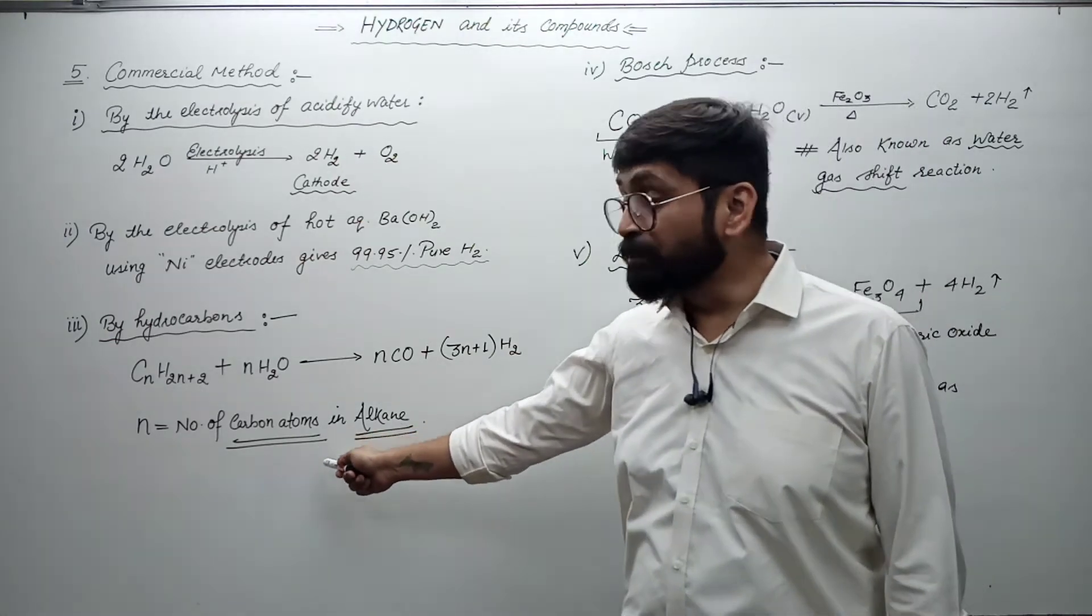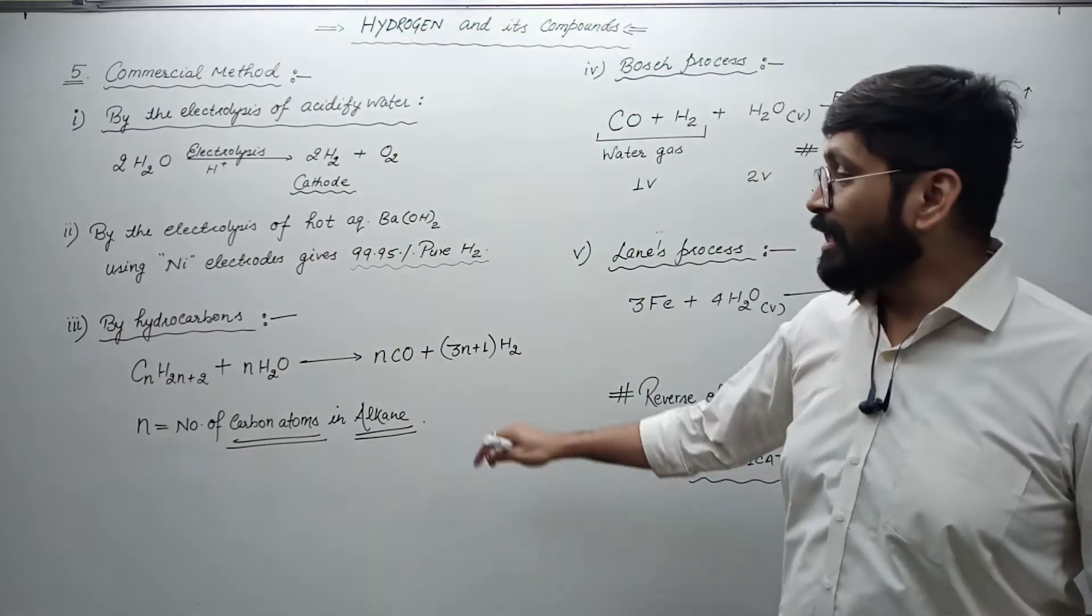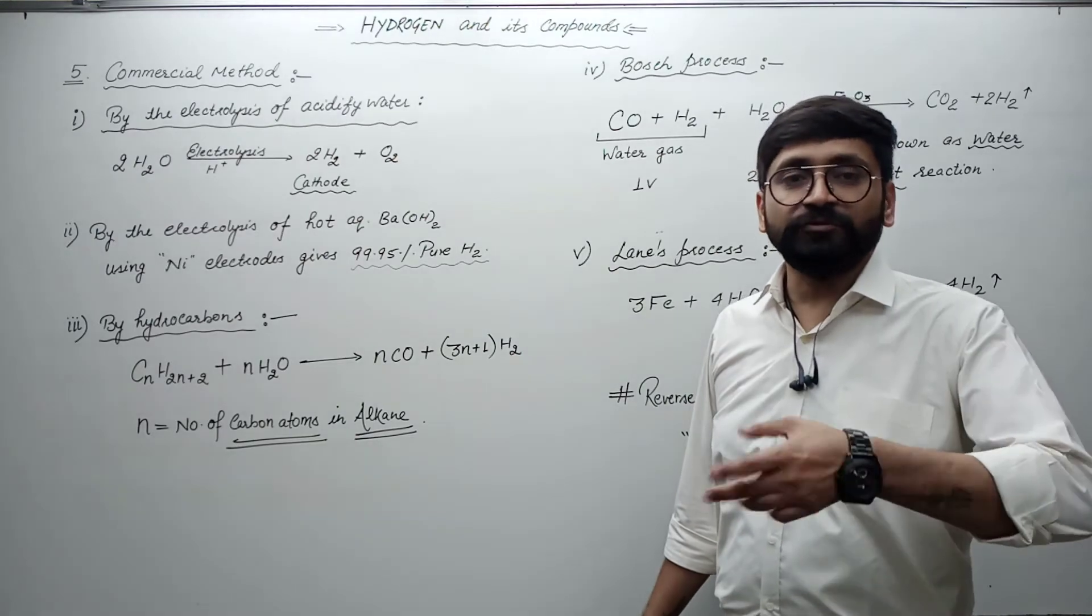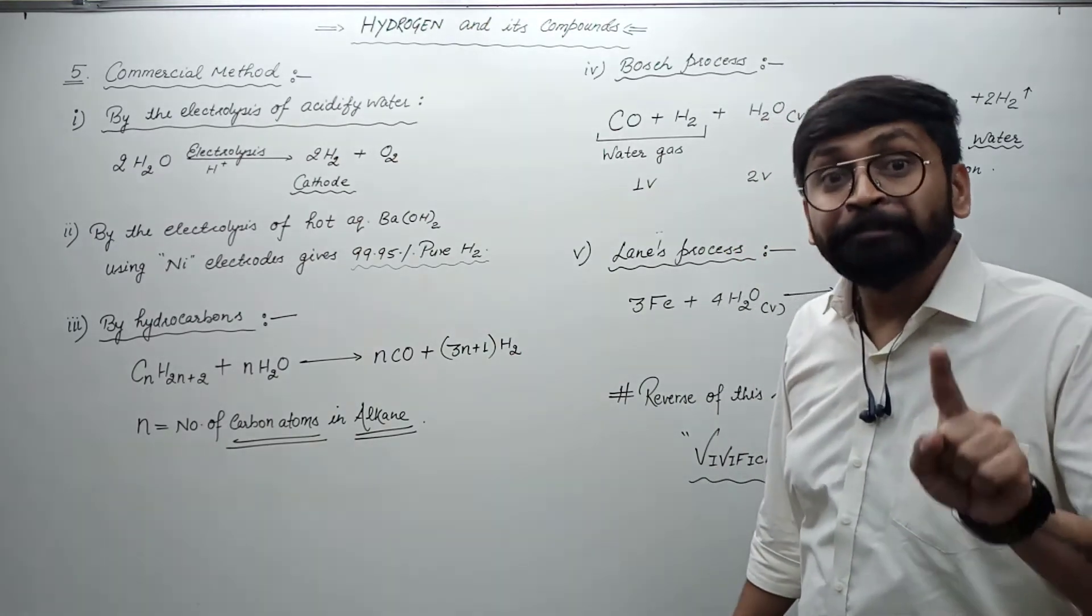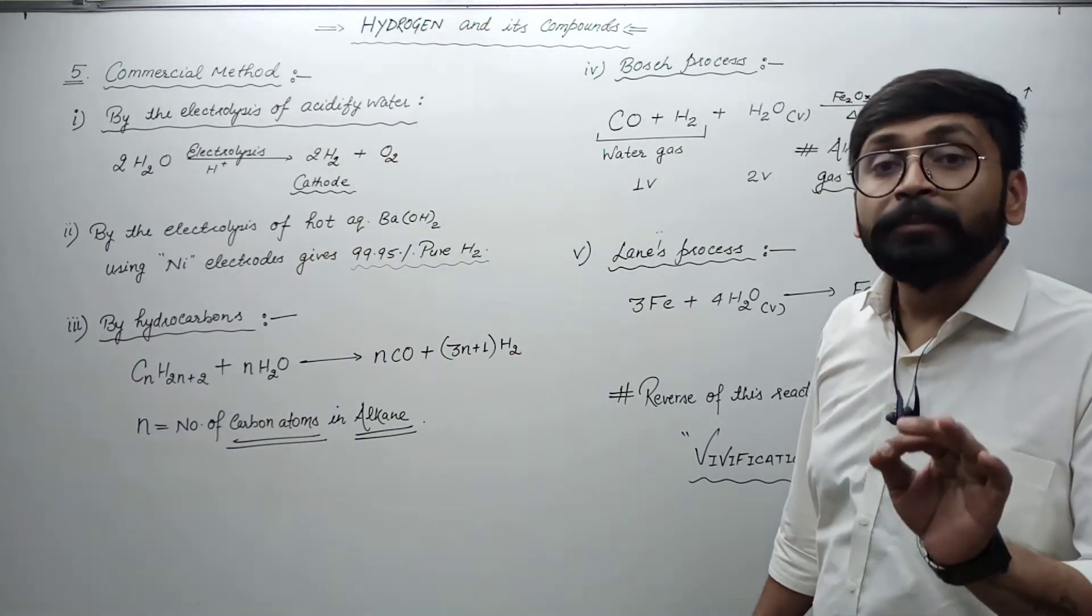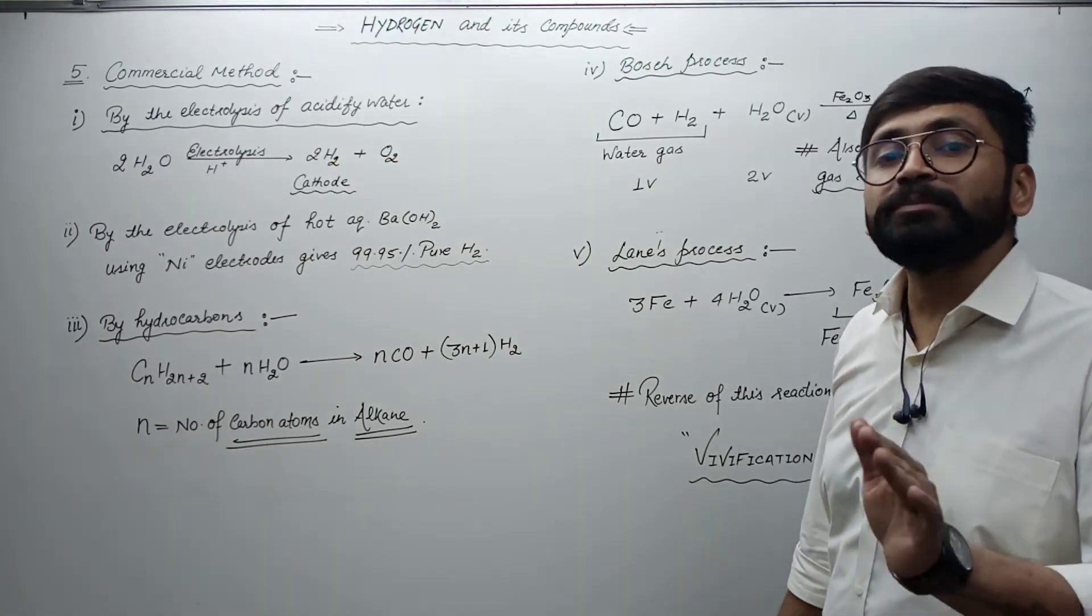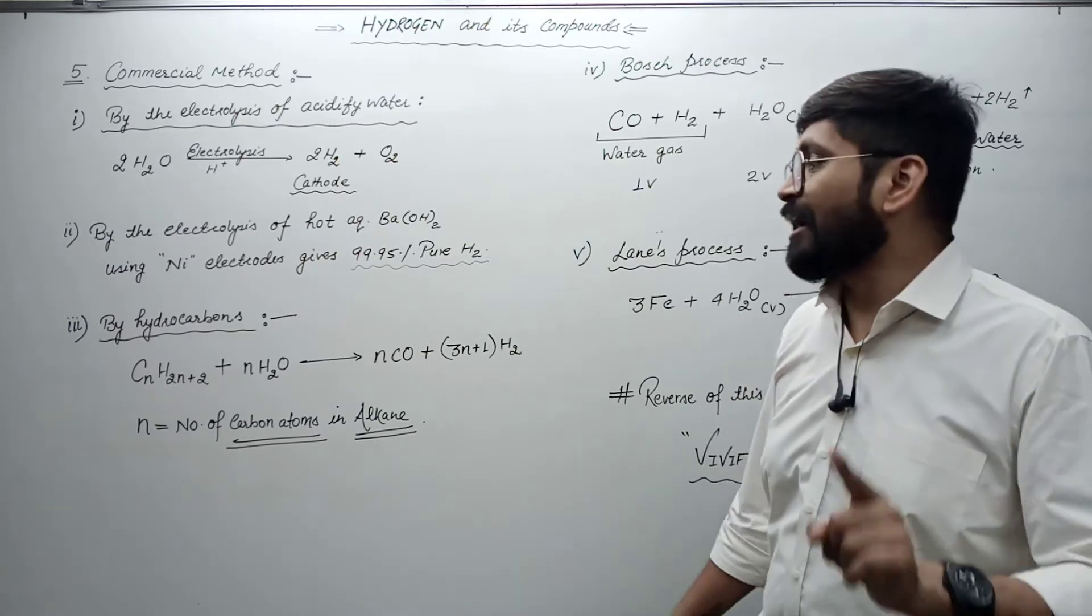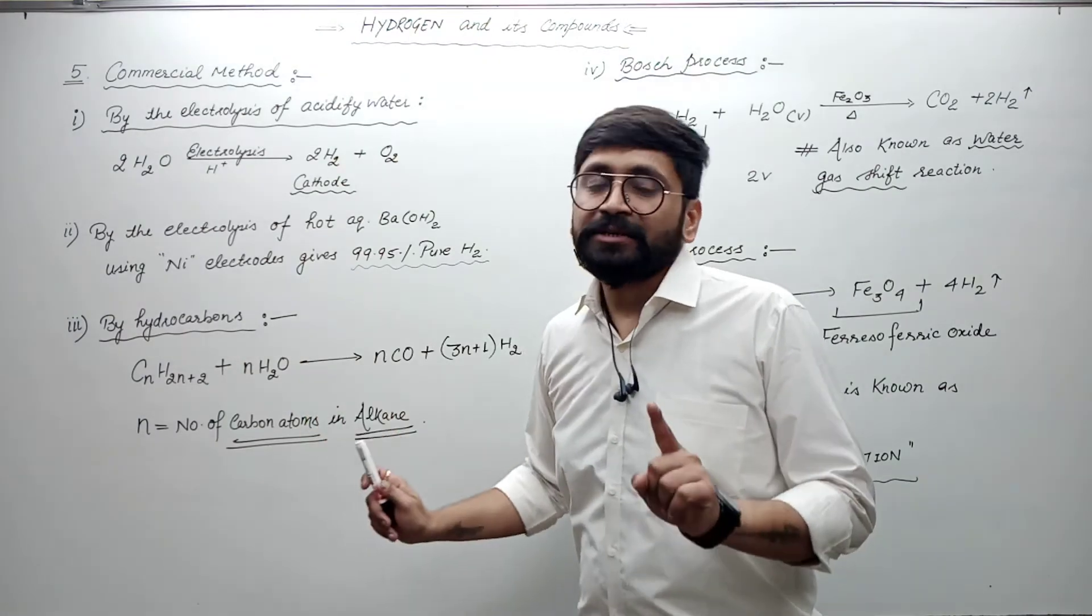Here N simply represents number of carbon atoms in the alkane. If you can see this reaction, you can do the reaction with all alkanes. N is representing number of carbon atoms present in alkane. If I talk about methane, we have one carbon, so we will keep N's value as 1. Please keep this question.